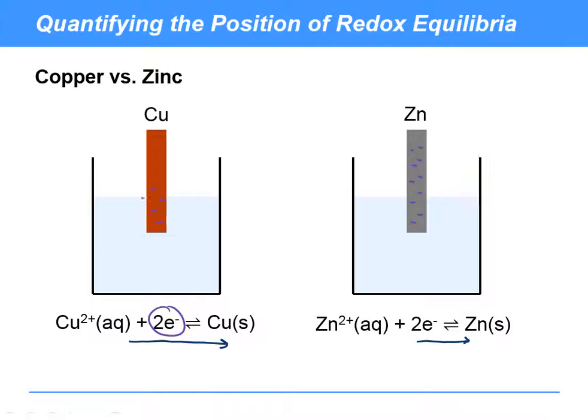We would really love to be able to measure the position of these equilibria quantitatively. Actually, the electrons sitting on the metal here provide exactly the means to do that, because we can connect this up to a circuit and measure the potential difference. We can measure the concentration of these electrons effectively by providing another conductor in the circuit.